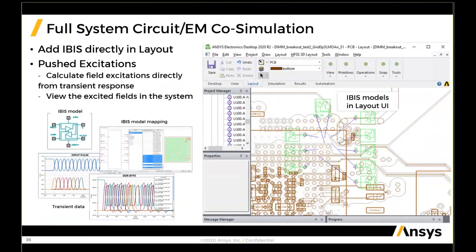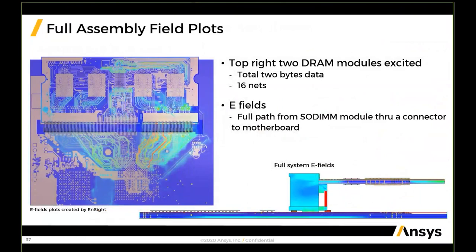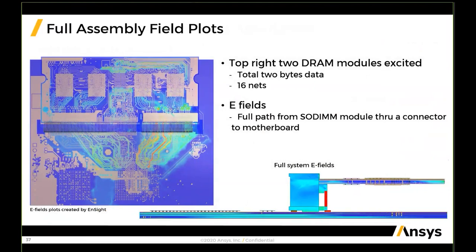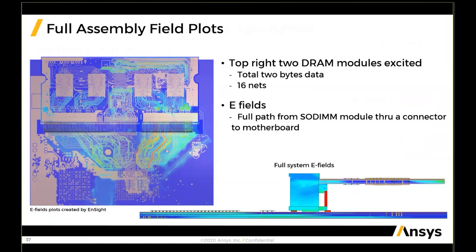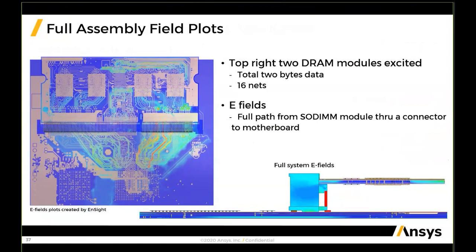Once you close this loop, you can view the excited fields in the entire system. I'm excited to share our new post-processing capabilities enabled via the Ensight product. At the bottom right, you see a full system field view from a side view going from the SODIMM card plugged into the connector, with fields propagating through the connector housing down to the motherboard. To the left is a cut-plane view of the E-field for the top-right DRAM modules being excited for a total of 2 bytes of data — 16 nets. This is quite powerful post-processing.